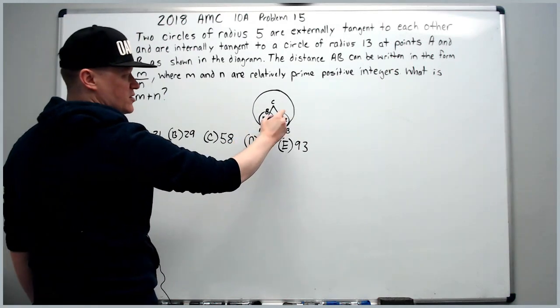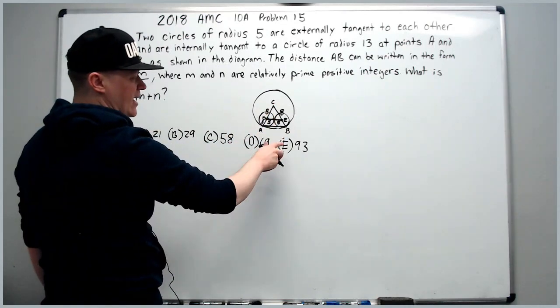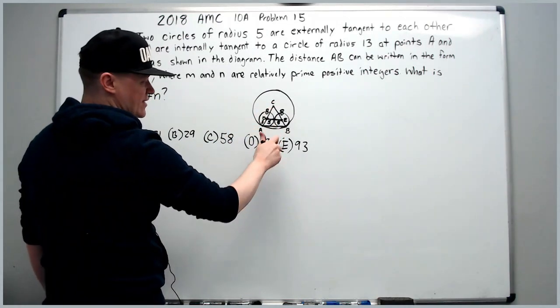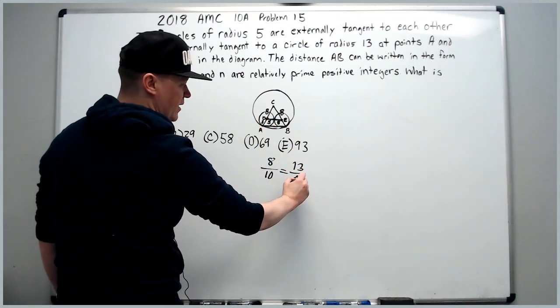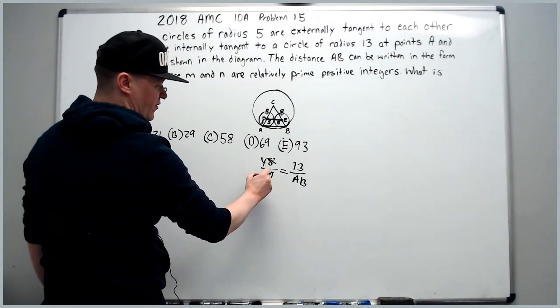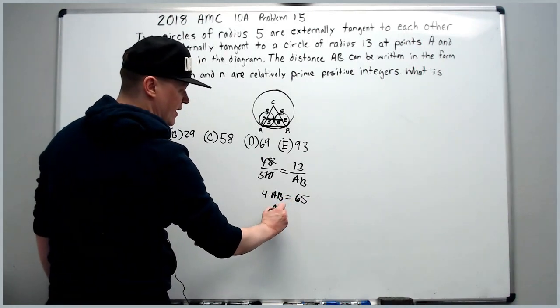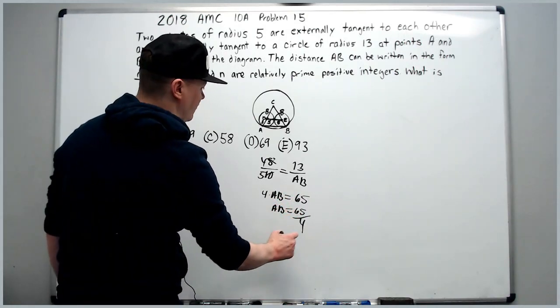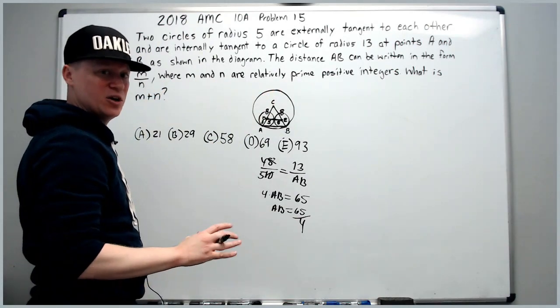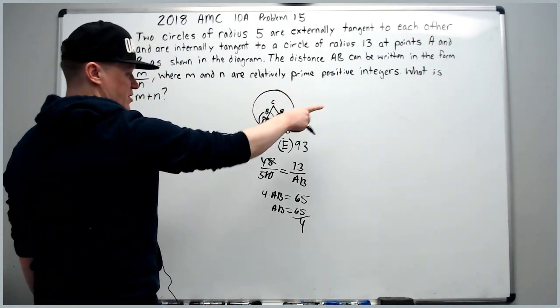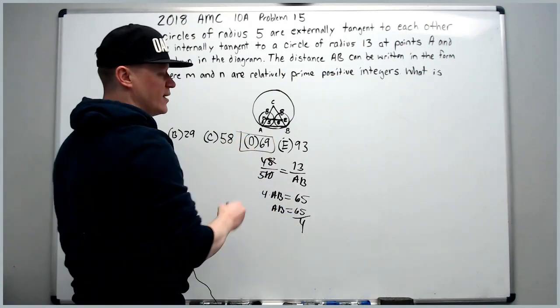So now you can use the ratio of CDE to CAB. It's going to be 8 over 10 has to equal 13 over AB. Cross multiply or simplify first 4 and 5. 4 times AB is equal to 65, and AB equals 65 over 4. So now answer the question - M and N are relatively prime, again it just means they have no common divisors, positive integers, they are. What is M plus N? 65 plus 4 is 69.